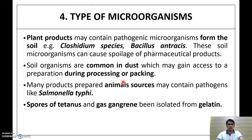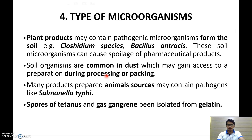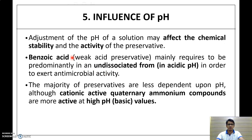The next factor is the type of microorganism. Clostridium species and Bacillus anthracis are pathogenic microorganisms found in plant products that may cause spoilage of pharmaceutical products. Some soil organisms are common in dust and may gain access to preparations during processing or packaging. Products prepared from animal sources may be contaminated by pathogens such as Salmonella, and spores of tetanus and gas gangrene organisms have been isolated from gelatin.